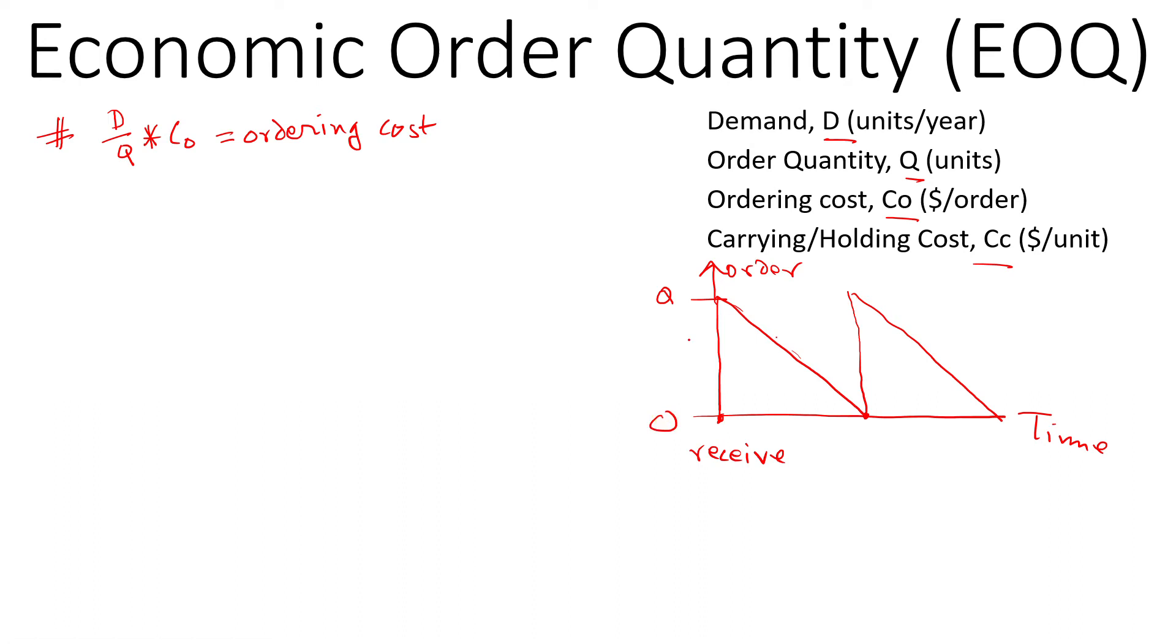The average number of inventory you're going to hold is basically Q plus zero by two. So that's the average number of inventory. We have Q by two number of units we are holding on average, and these cost CC per unit, so that will be our carrying cost or holding cost.